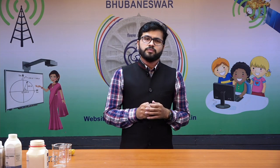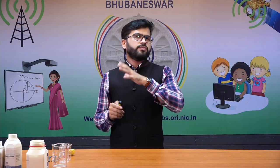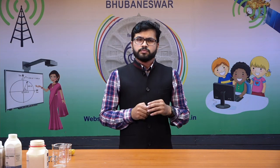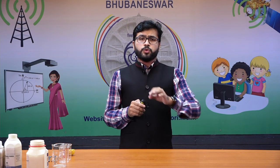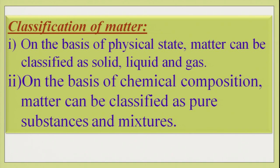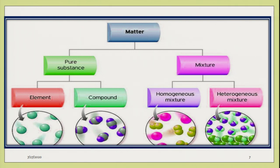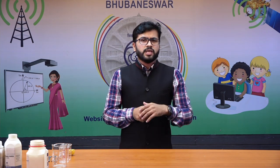Now let us classify matter. In your previous chapter, you studied that matter can be classified on the basis of physical properties as solid, liquid, and gas. But on the basis of chemical composition, matter can be classified as pure substances and mixtures. As shown in the flow diagram on your screen, matter is first classified into pure substances and mixtures. Pure substances are further classified into elements and compounds, which we will study at the end of this chapter. Mixtures are classified into homogeneous and heterogeneous mixtures.